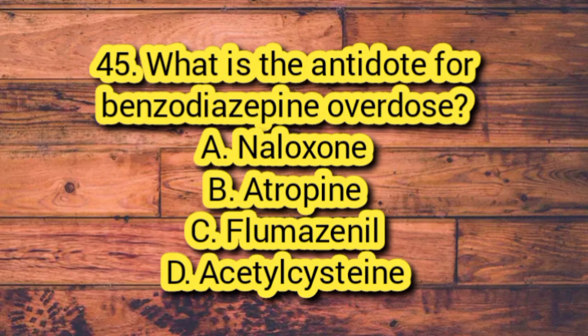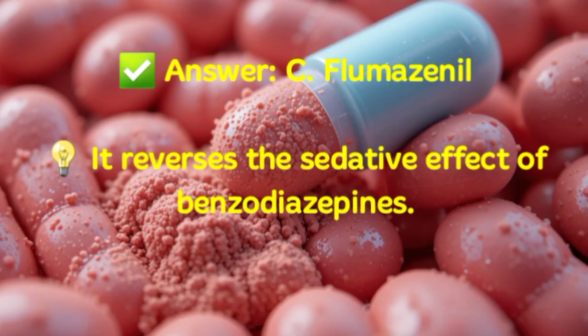Question 45. What is the antidote for benzodiazepine overdose? A. Naloxone. B. Atropine. C. Flumazenil. D. Acetylcysteine. Answer: C. Flumazenil. It reverses the sedative effect of benzodiazepines.